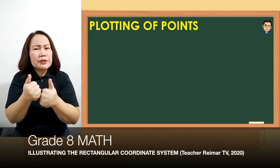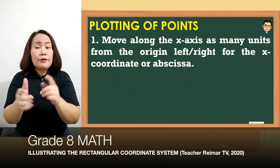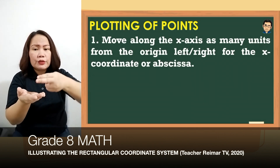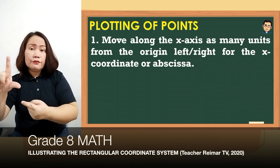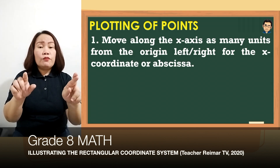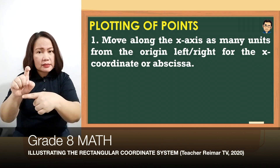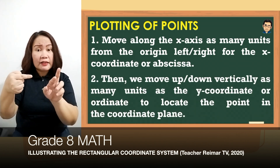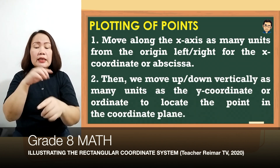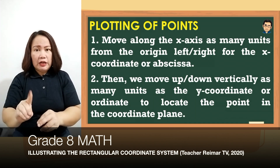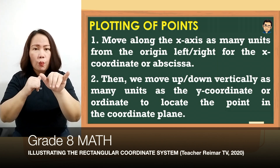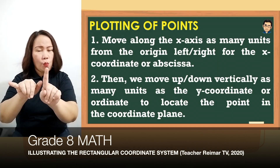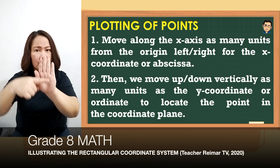How do we plot points in the coordinate plane? First, move along the x-axis as many units from the origin left or right for the x-coordinate or abscissa. Kapag negative yung x-coordinate natin, we move to the left; we move to the right kapag positive. After that, we move up or down vertically as many units as the y-coordinate or ordinate to locate the point in the coordinate plane. Kapag positive yung y-coordinate, mag-up tayo; kapag negative naman, pupunta tayo ng down.